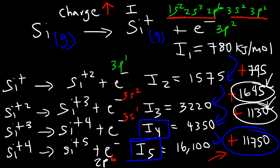Because silicon has four valence electrons, the fifth ionization energy is incredibly large. Aluminum has three valence electrons, so the first three ionization energy values are relatively low compared to the fourth ionization energy, which is huge because you're removing a core electron as opposed to a valence electron.